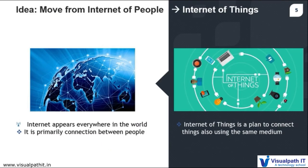Now we'll understand how Internet of Things became so popular. First, we'll see how the Internet is connected with people, and then how things are connected with things over the Internet. As we all know, we use Internet connections for communication, data transfer, as well as for various applications. So machines and people can come together over the Internet.